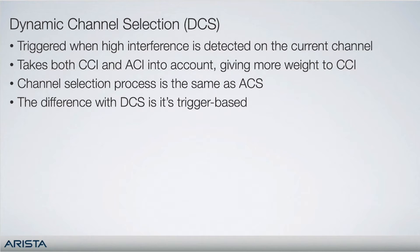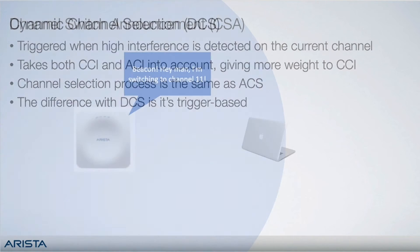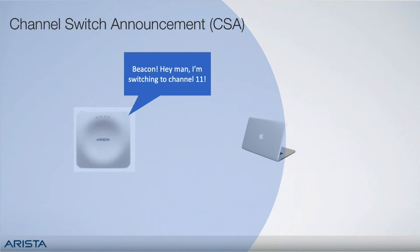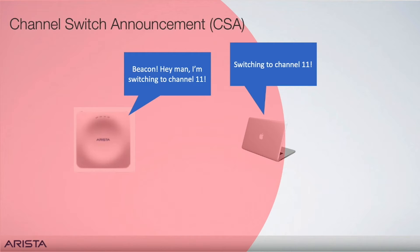When there is a change of channel, channel switch announcements come into play. During periodic ACS, the AP will send five beacons with channel switch announcements to inform clients before switching to the new channel. This is not done in the case of DCS because it is a trigger-based mechanism that goes off of interference, so there's no point in attempting to send CSAs when there is high interference. Additionally, Arista APs are client aware — if the AP detects voice or video calls when periodic ACS begins to initialize a channel change, it will be deferred to allow the call to not be interrupted.